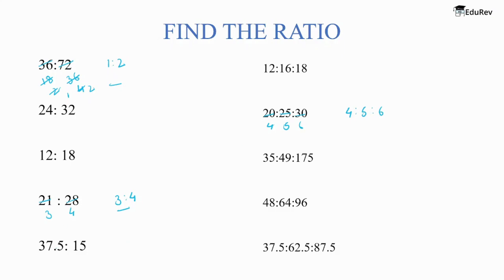For ratios with decimals, we have to remove the decimal and convert to integer form. We multiply by 2 to eliminate decimals and then simplify. Similarly, wherever you have decimals, convert to integer form first and then simplify the ratio.